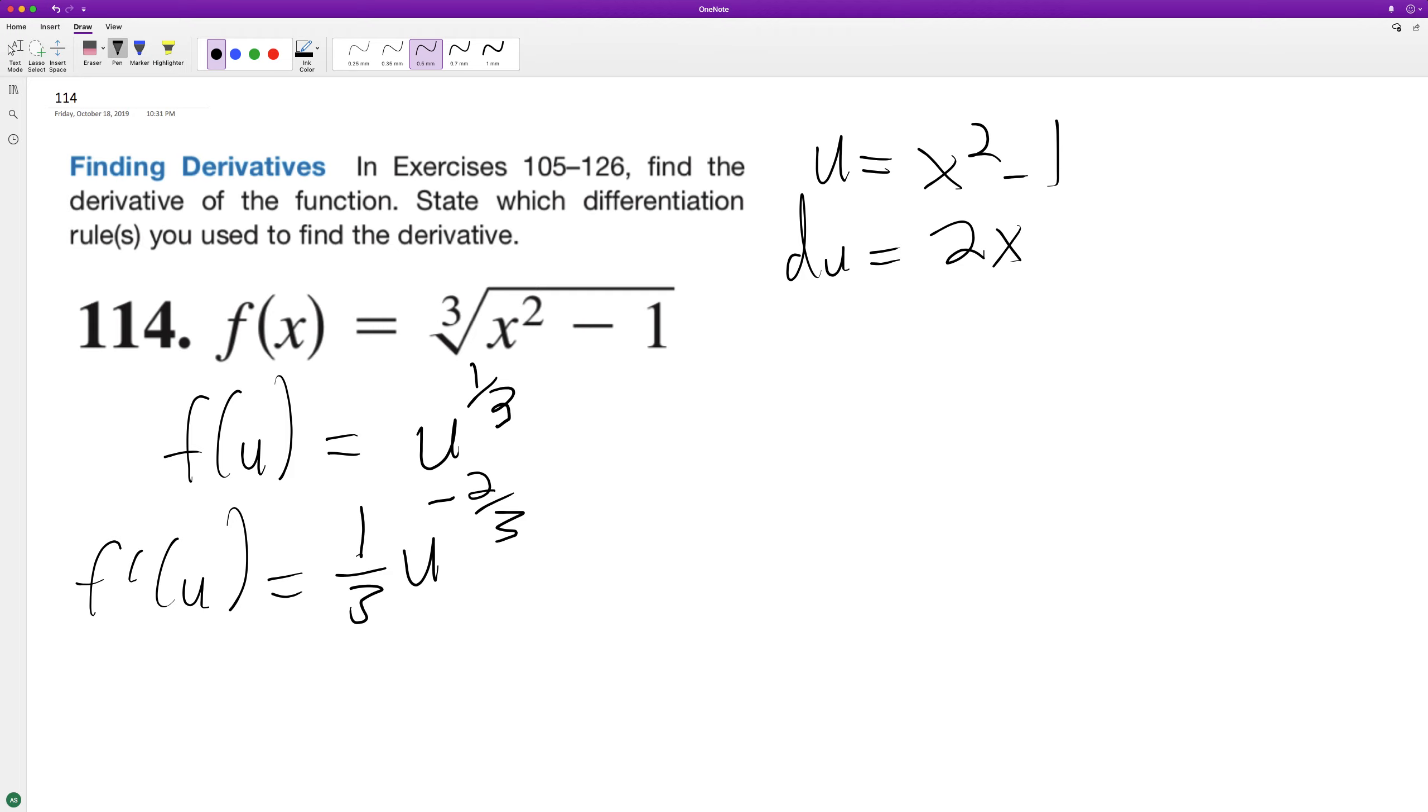And now what we'll get is we can sub back in. So we'll have f prime of x is equal to 1 third times 2x times 2x is the du. I should have wrote this.